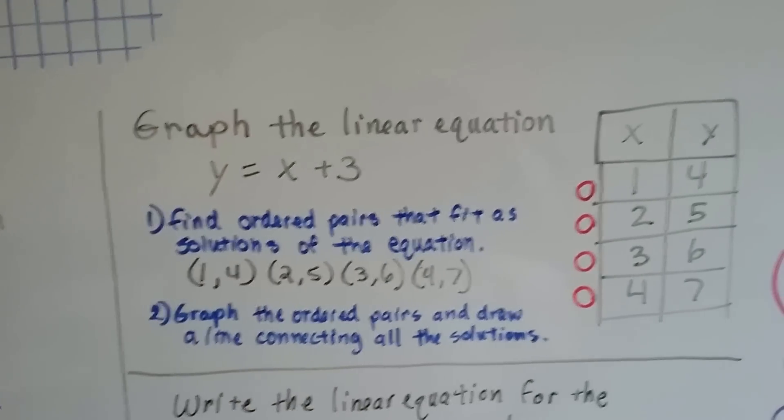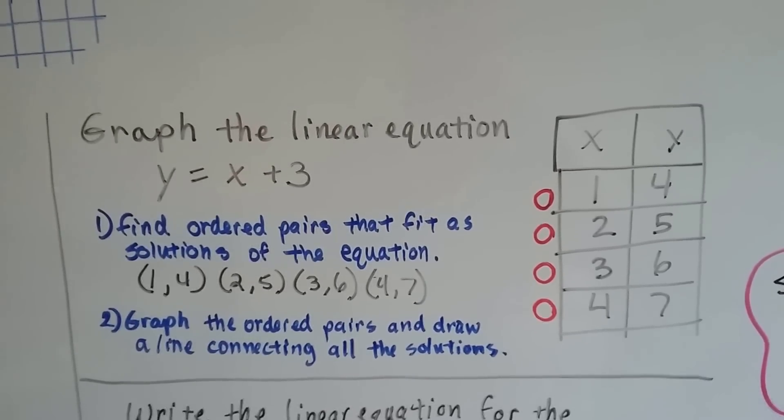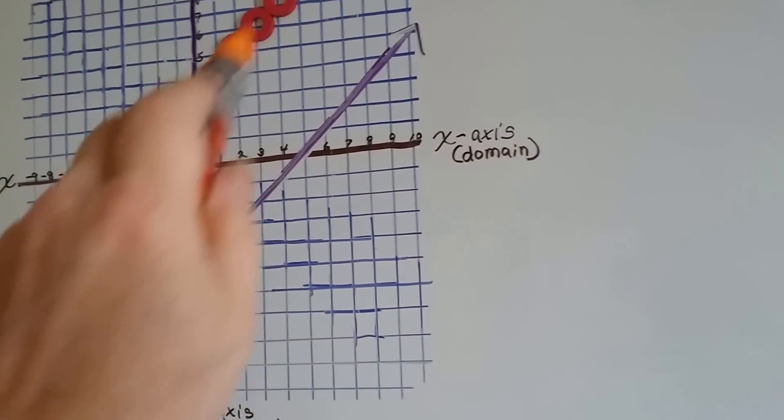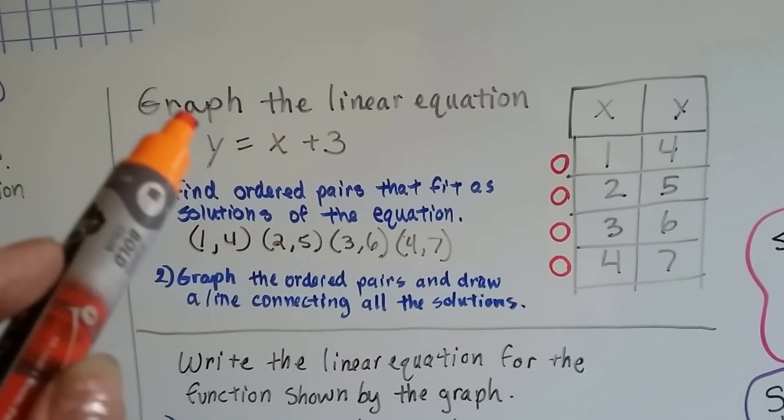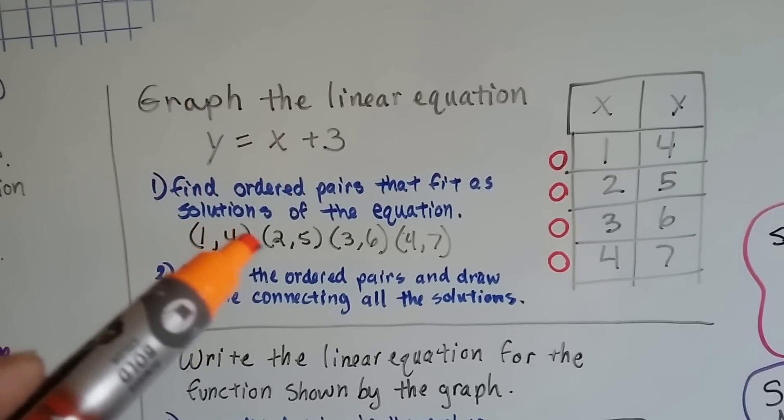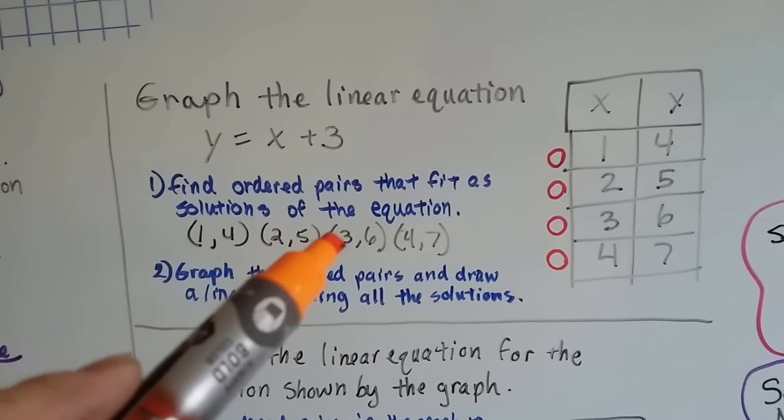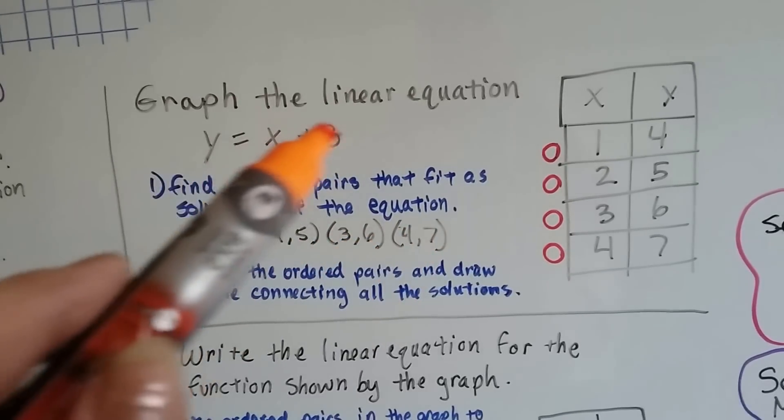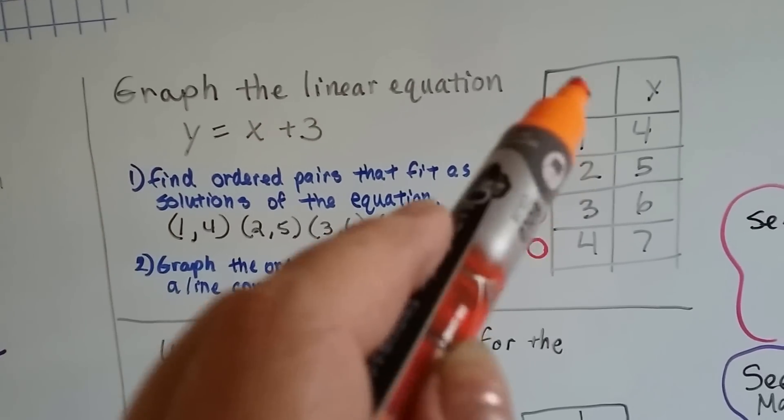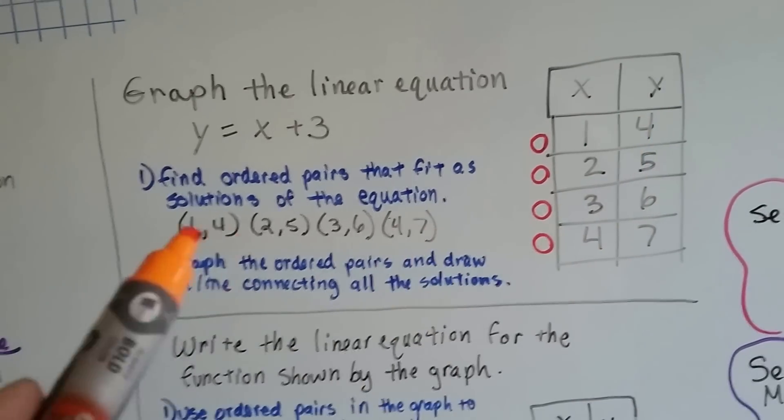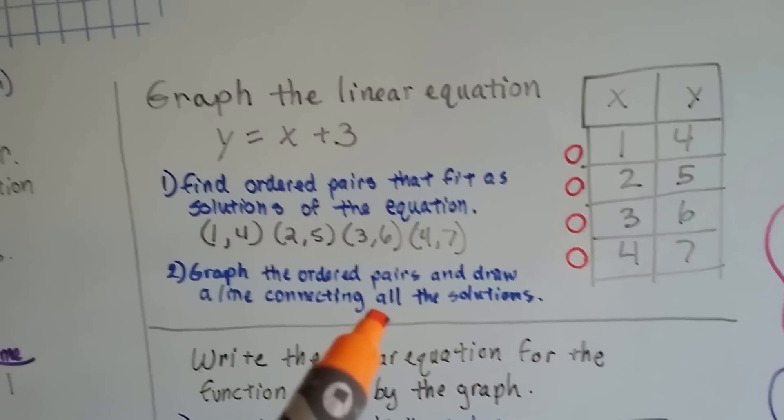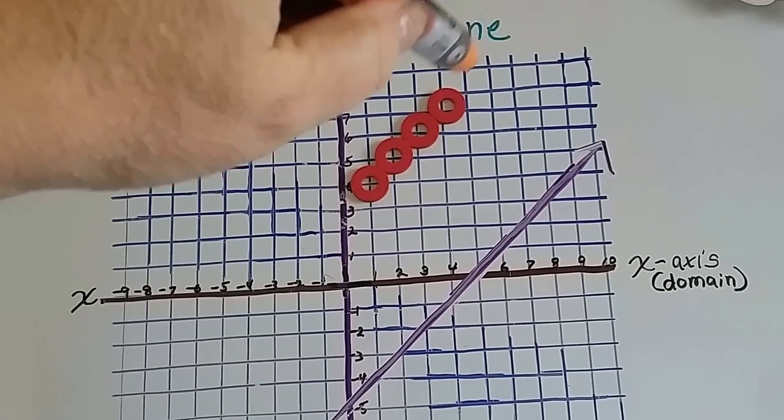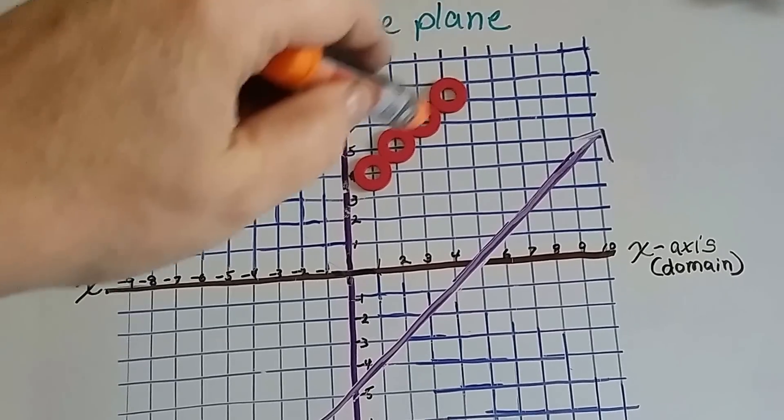So it says, graph the linear equation. Y equals x plus 3. So I did. These are the red circle rings. That's why there's red circles next to this. I found ordered pairs that fit solutions to this equation. 1 plus 3 is 4. 2 plus 3 is 5. 3 plus 3 is 6. 4 plus 3 is 7. And they're all solutions to this equation. And then I made ordered pairs out of these. On the table. Then I was able to graph the ordered pairs and draw a line connecting all the solutions. So the line would be coming straight through the red dots. And that would be every solution to that equation.